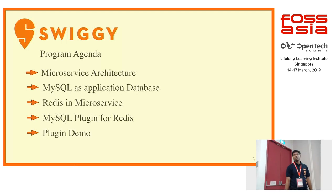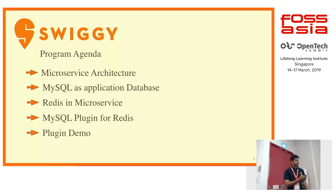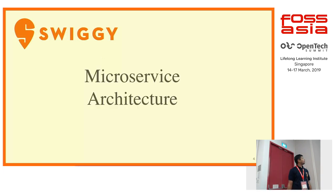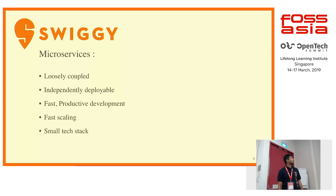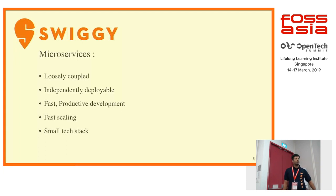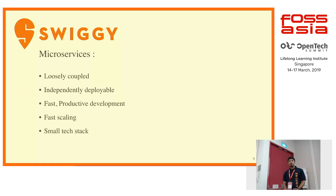Let's get started with the microservice architecture first. Microservices are small applications for a defined use case which interact with each other via defined APIs or contracts, and they together solve a purpose.